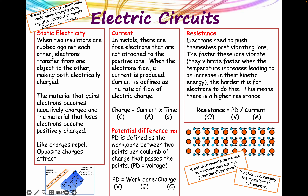PD is defined as the work done between two points in a circuit per coulomb, and you can measure it with a voltmeter. For current, you need to measure it with an ammeter. We'll talk about how you put them in a circuit correctly later on - hopefully there'll be a slide that shows you the correct circuit.